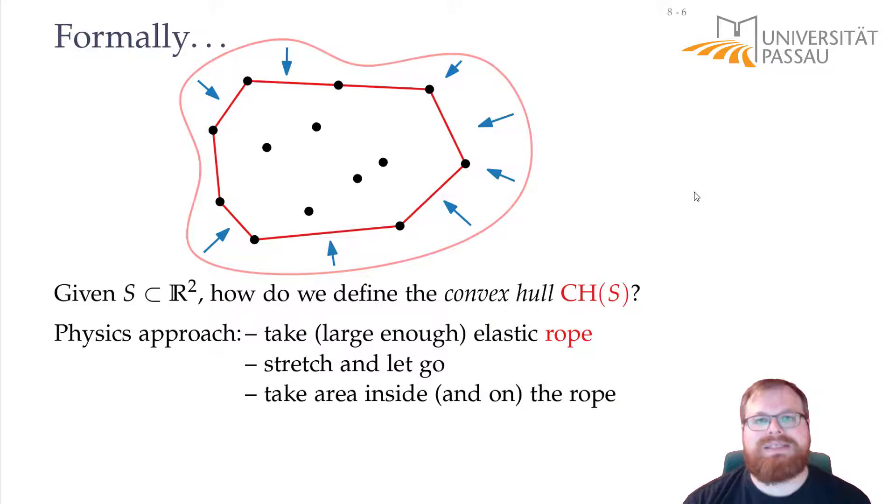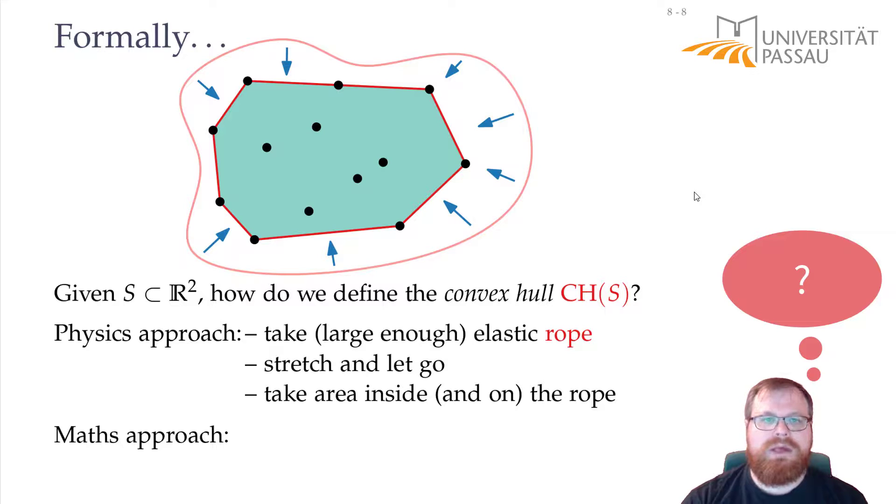The problem for us is, how do we compute this? You need a physics engine, you have to program it, and then it has to handle everything for you, and it is basically a black box. That's not something that we as theoreticians can use or analyze. So, we want a more mathematical approach. We want a mathematical definition of how this convex hull looks like. Can you think of some way we can get this convex hull in a mathematical sense?